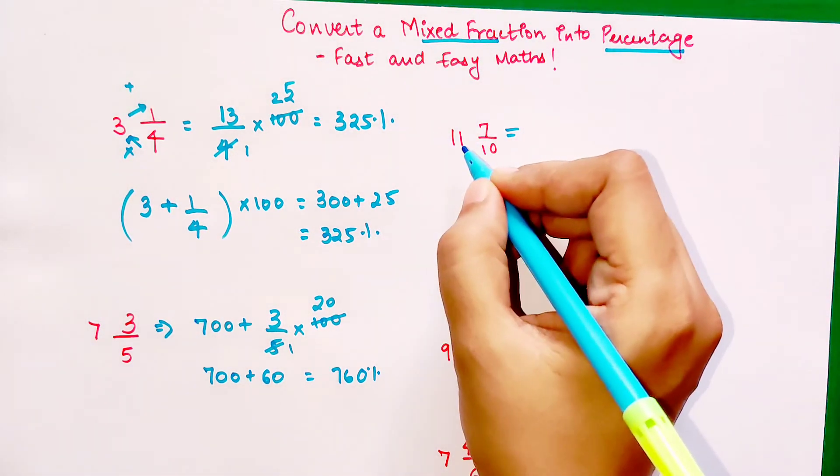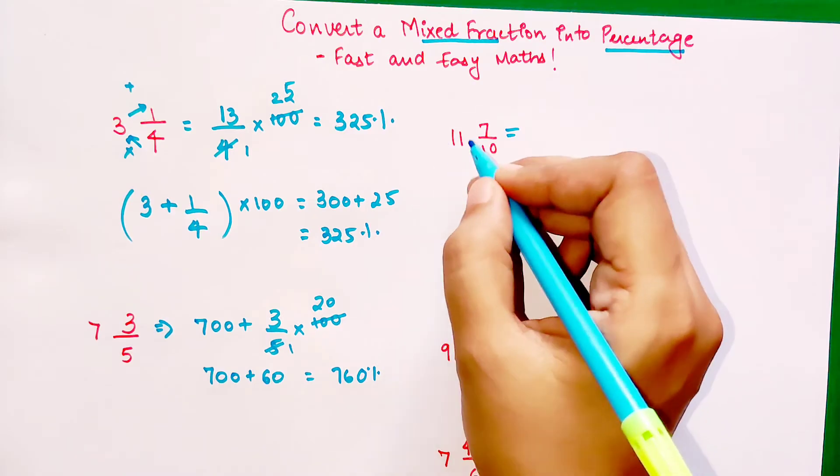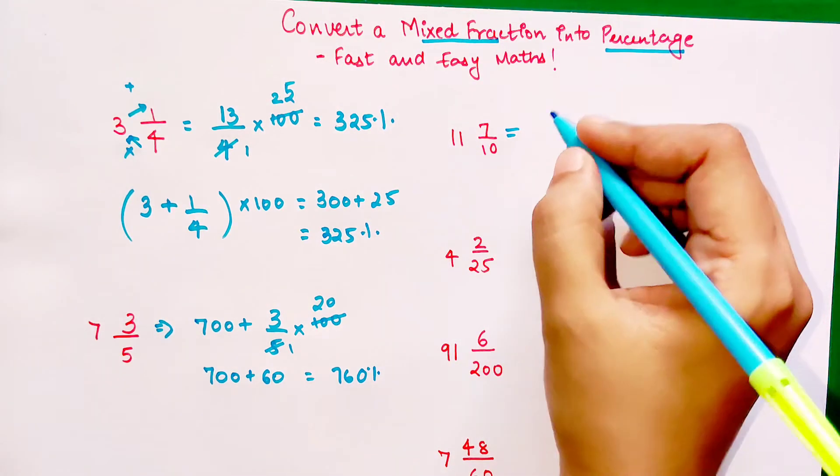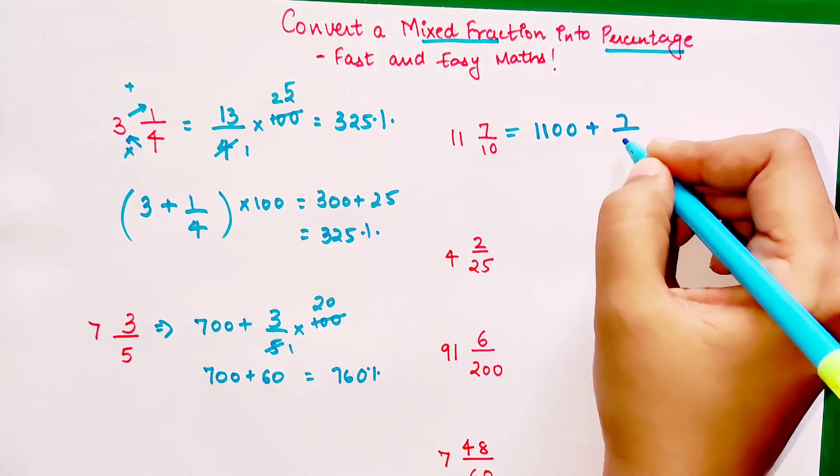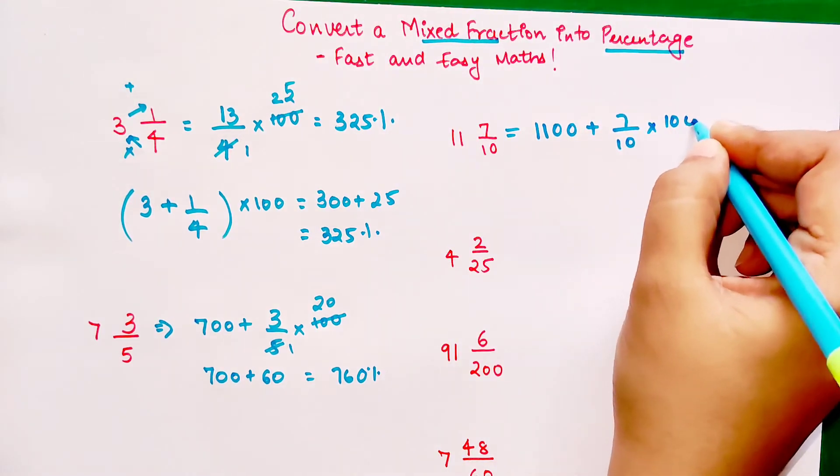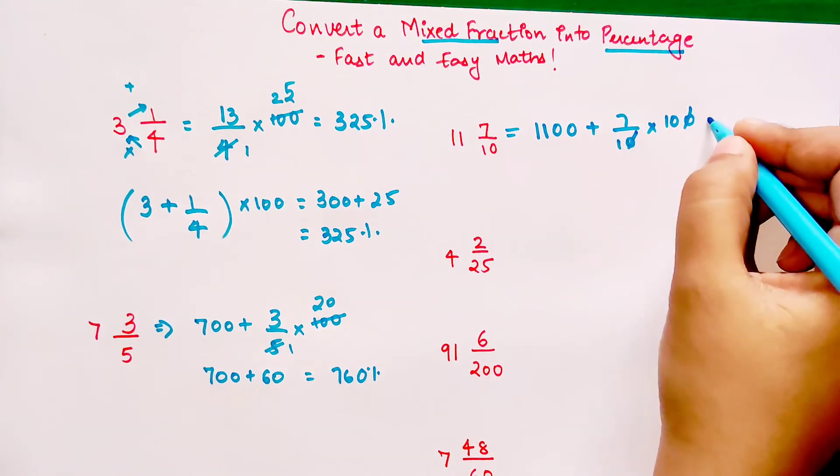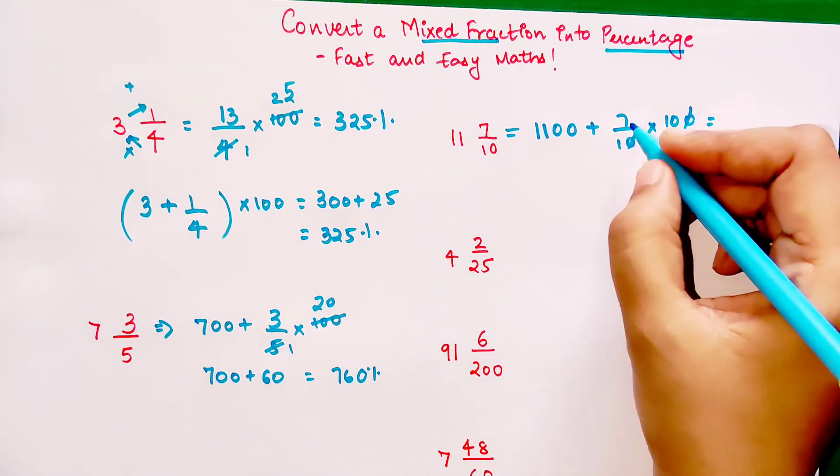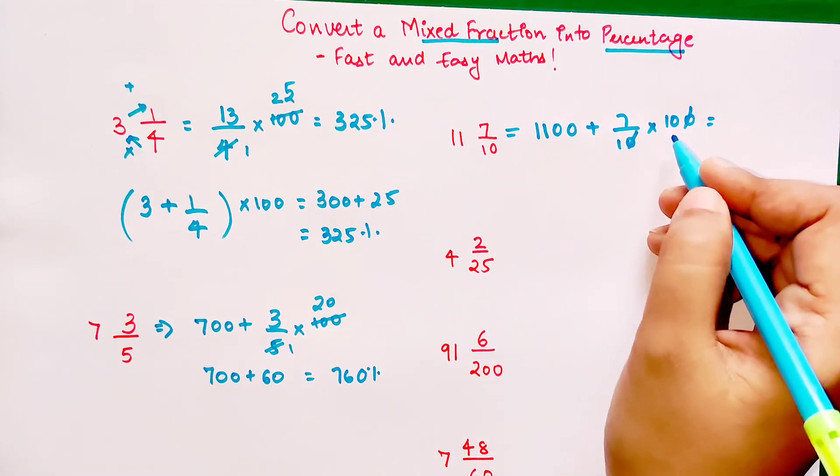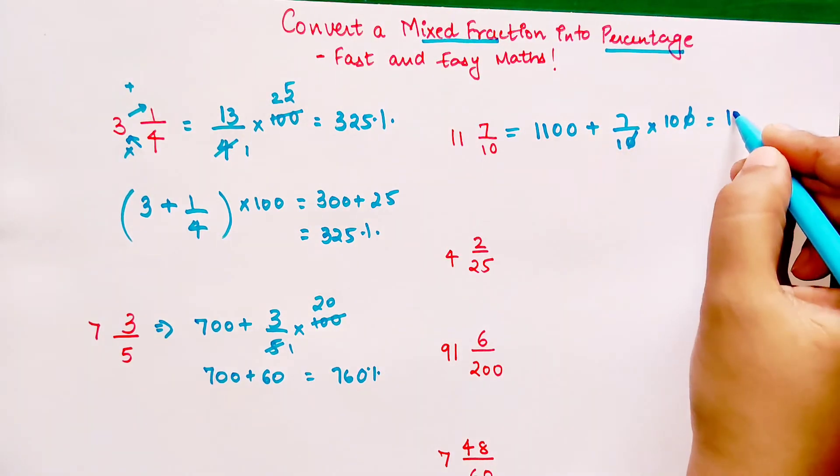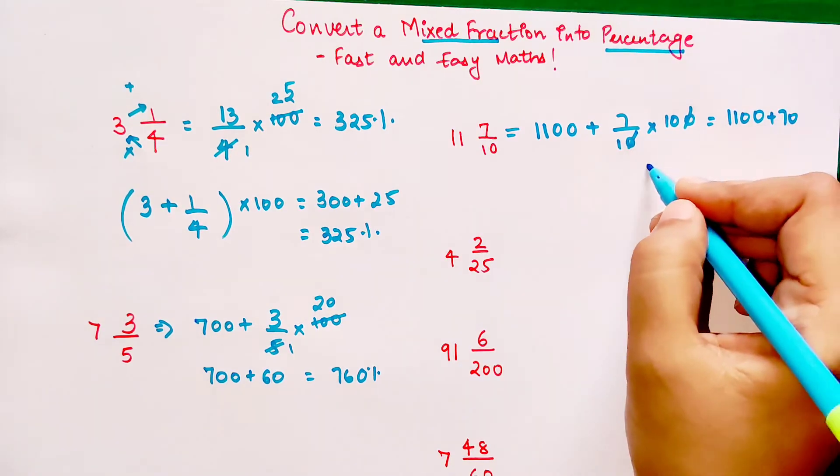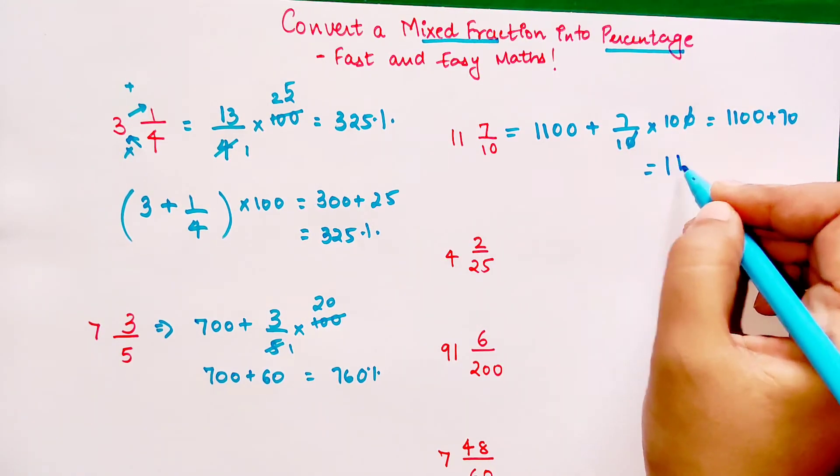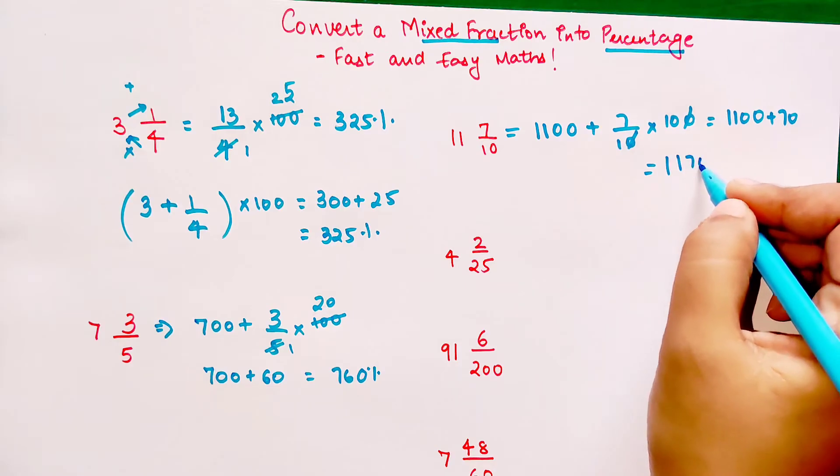Here we add two zeros in front of the integer part of the mixed fraction. So I get 1100 plus 7/10 into 100. The zeros are getting cancelled. When you add 1100 and 7 into 10 which is 70, you get 1100 plus 70. Your answer is 1170 percent.